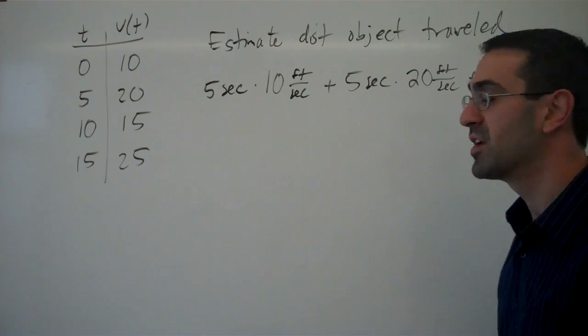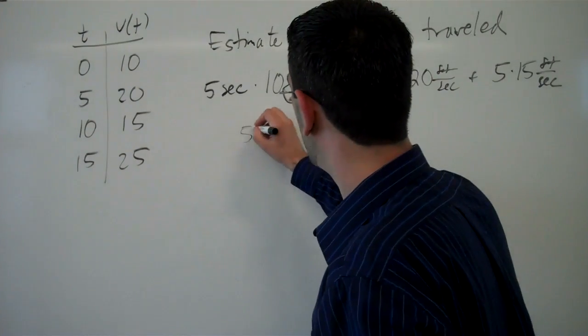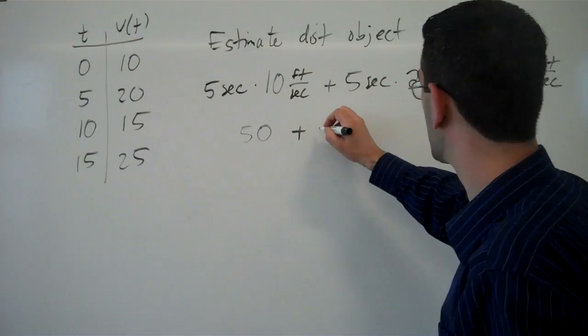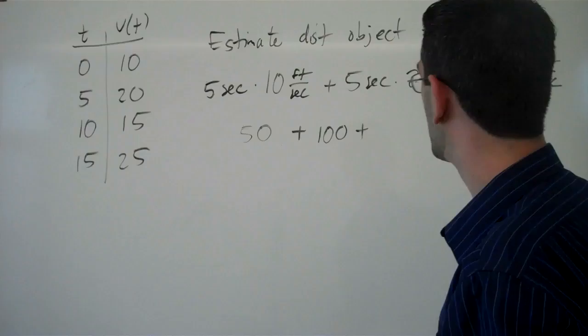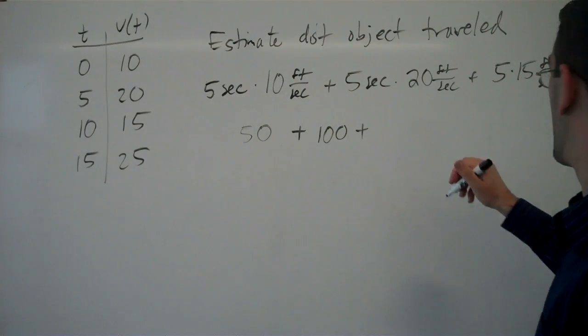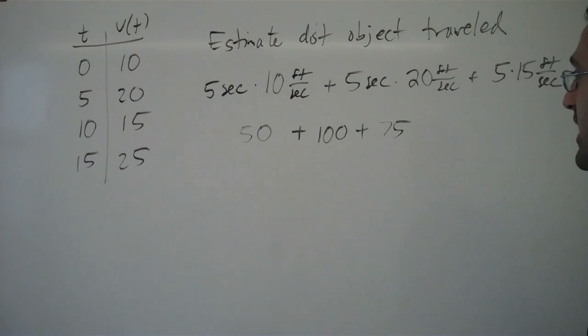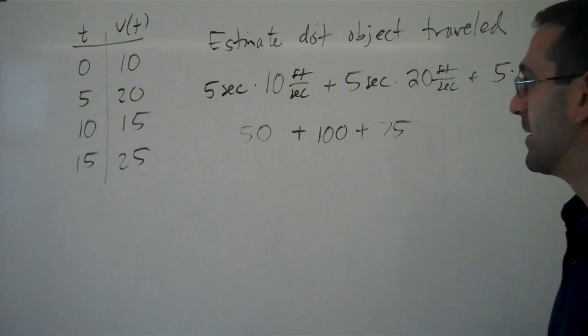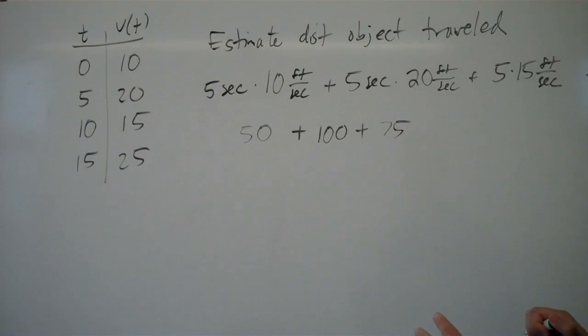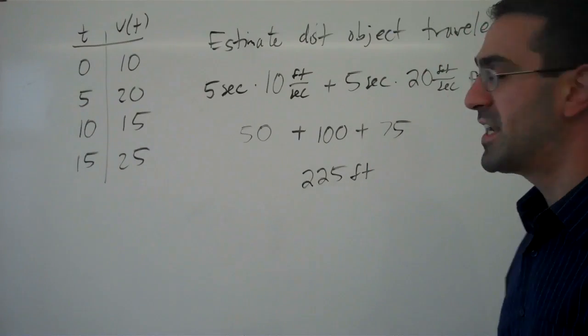And by multiplying those out, we'd be able to estimate the distance traveled. 50 feet during the first second, 100 feet during the second 5 seconds, second group of 5 seconds, and then 75 during those last 5, the last 5 second interval, and giving us a total of 225 feet as our estimate.